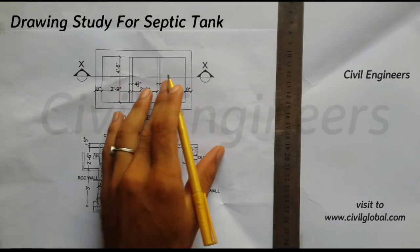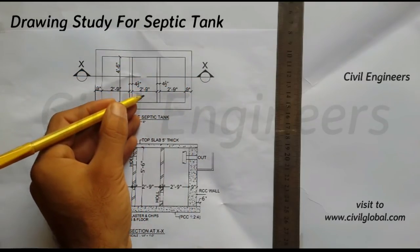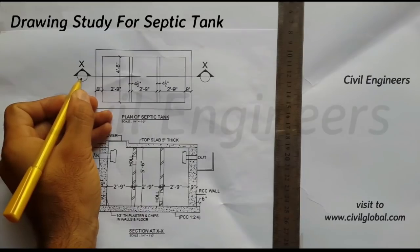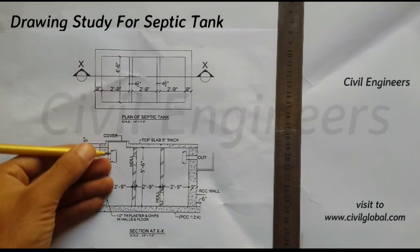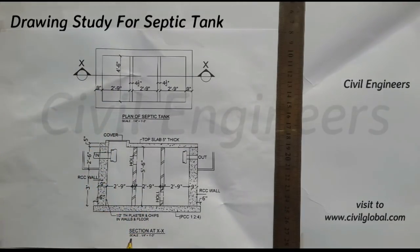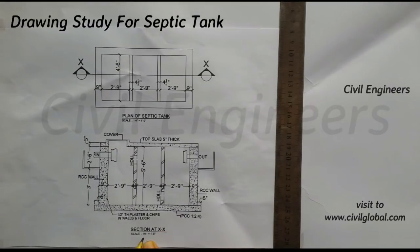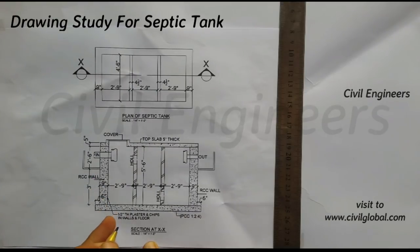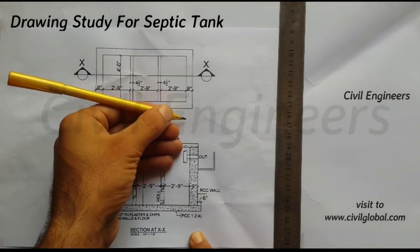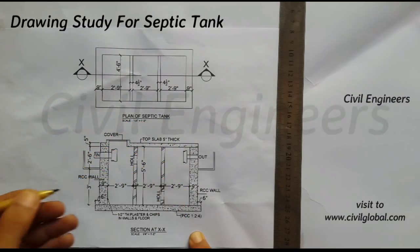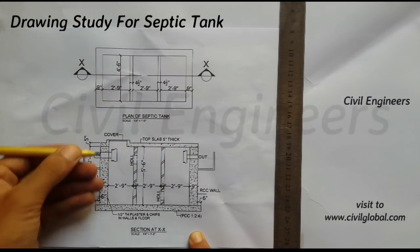Now I will show you the cross section for this shifting tank — the X-X section. Come here, this is the section at X-X. I have already taken the same scale: 1/4 inch equals 1 foot. This is the 9-inch wall on one side and the other side.